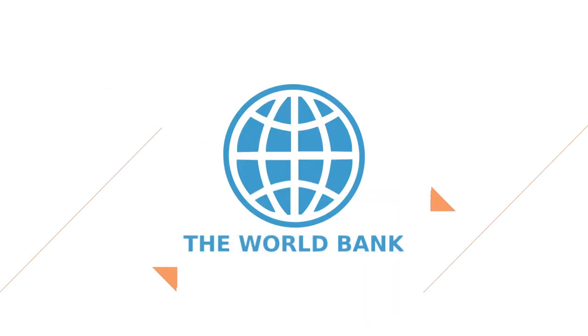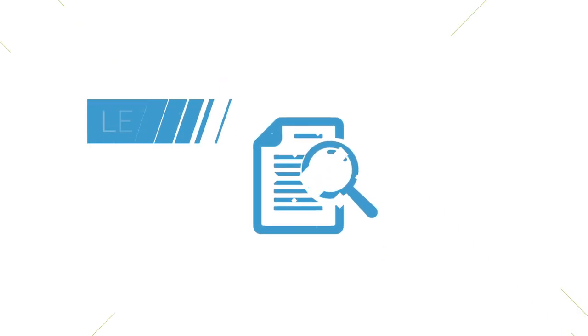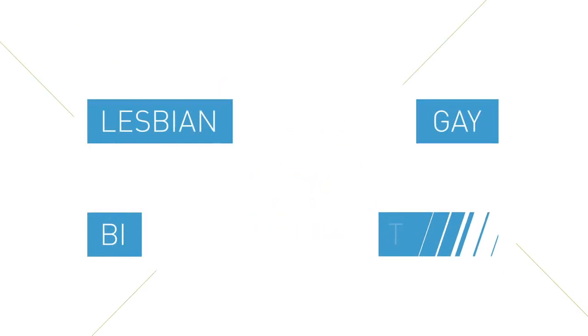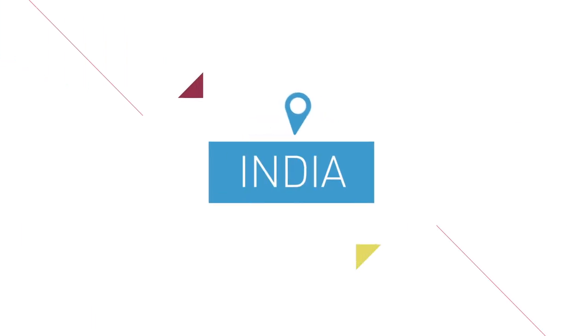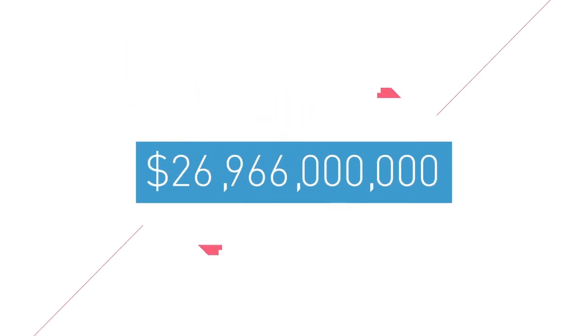According to a recent World Bank pilot study, discrimination against lesbian, gay, bi, and trans people could be costing an economy the size of India's up to $32 billion a year.